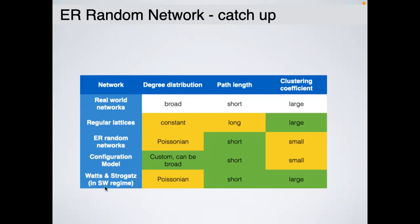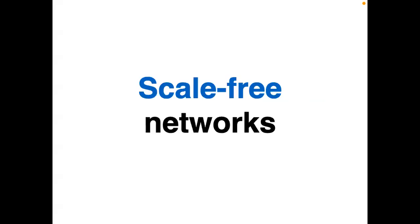The Watts-Strogatz model achieves both short path length and high clustering coefficient, but it has a Poissonian degree distribution — it is still lacking the broad degree distribution of real networks.